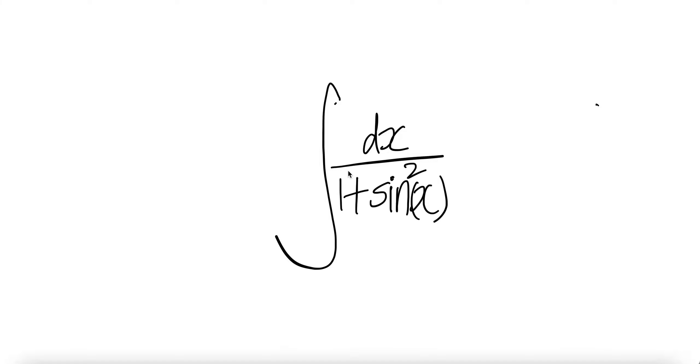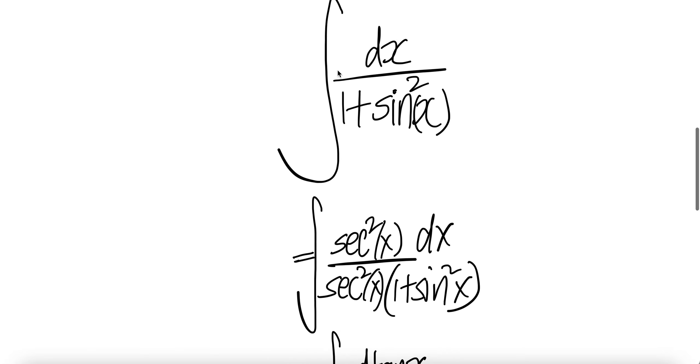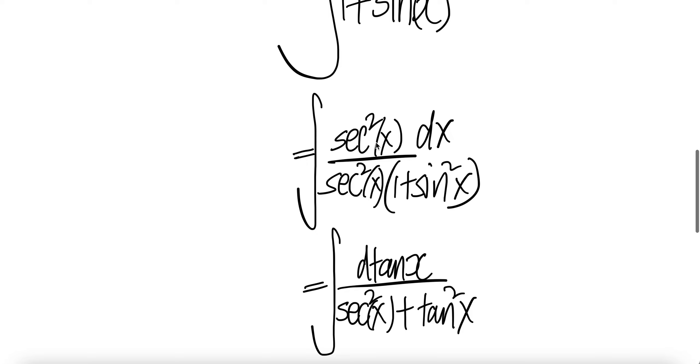Let's look at the integral 1 over 1 plus sine squared x. Multiply top and bottom with sec squared x. Push this into dx.